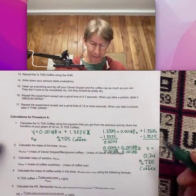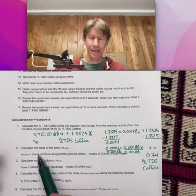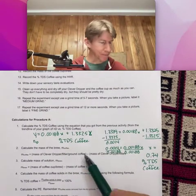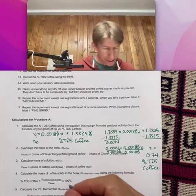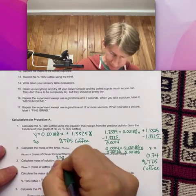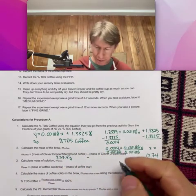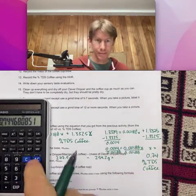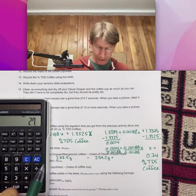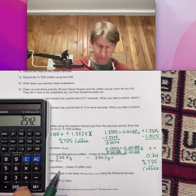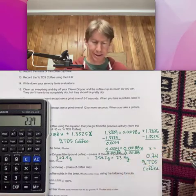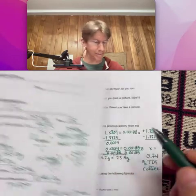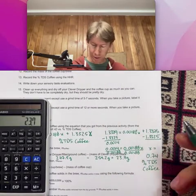Now, that took up a little more space than I thought, but I think we can still see the next step. It says calculate the mass of the brew M coffee. And for that, it's going to be mass of clever dripper filter ground coffee. For me, that was 277.9 minus mass of clever dripper filter 254.2. 23.7 grams. And I was shooting for 23.3 grams there. So not too bad.